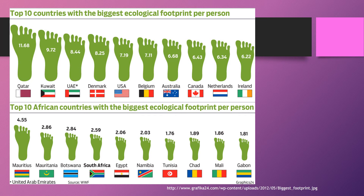Here are the top 10 countries with the biggest ecological footprint per person. Qatar is at 11.68, followed by Kuwait, then moving down through Denmark and the USA. Australia is listed at 6.68, though depending on how recent the statistics are, we're around seven hectares per person. Looking at African countries, even the biggest ecological footprint — Mauritius at 4.55 — is still much less than Australia's, despite Africa's huge population.